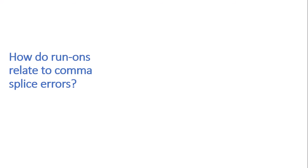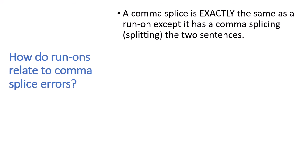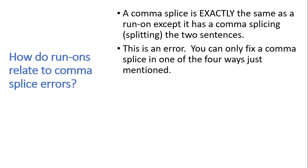So why am I talking about this for review? How do run-ons relate to comma splice errors? Well, actually a comma splice is exactly the same as a run-on, except it has a comma splicing or splitting the two sentences. This is an error. You can only fix a comma splice in one of the five ways we just mentioned: putting in a period, turning the comma into a semicolon, adding a FANBOYS conjunction after the comma, adding a dependent marker word, or rewriting the sentence. You cannot just take the comma out — if you just take the comma out, you are turning it into a run-on.